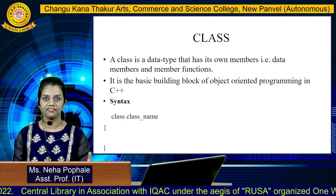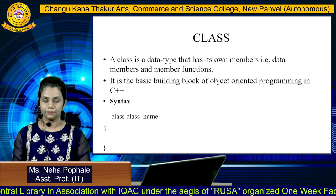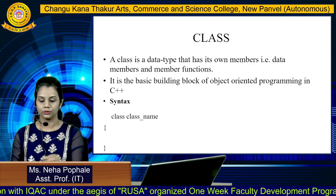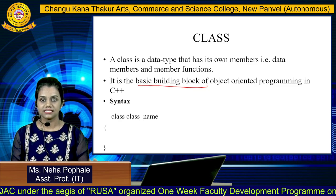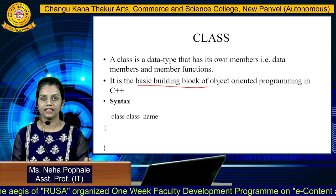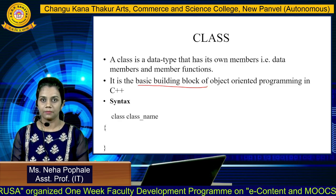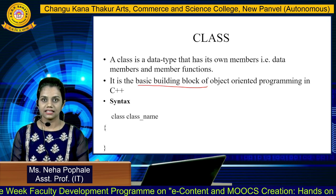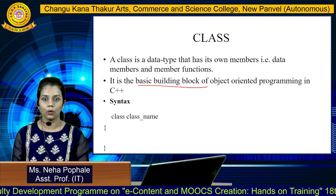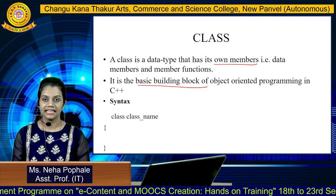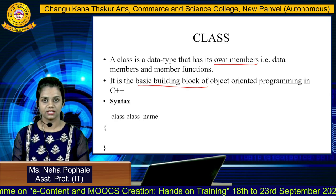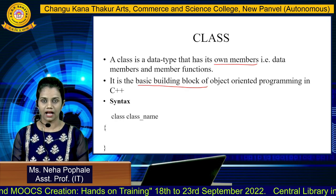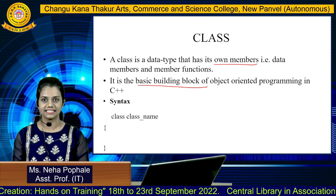First, let's discuss the first pillar of object-oriented programming, that is class. So, what is class? Class is basically a building block of object-oriented programming. Whenever you write a code for your program, your program should have at least one class. Class itself is called as a data type because it has its own members — they can be data members or member functions, which are nothing but variables and functions that we are going to use in the program. We have to declare or define them inside the class.